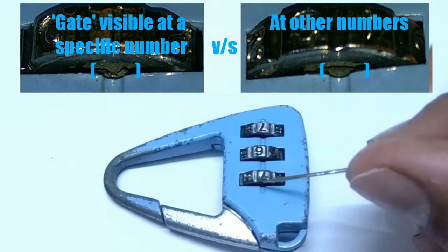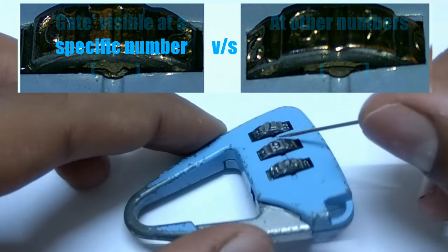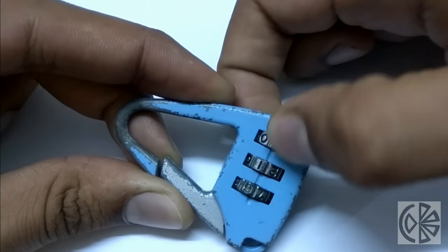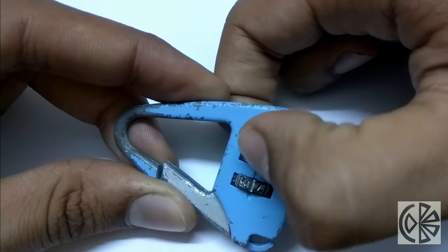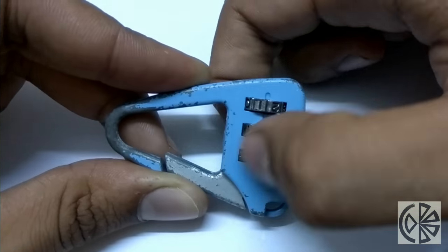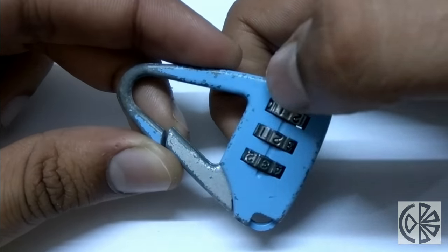a gate which you can see under a specific number as shown in the top left image. So let's start by turning each dial and finding the gate under each dial. Here I can see gates directly, but you can also use a pin to feel the gate. In this lock I found the gates below number 1, 2, and 3.